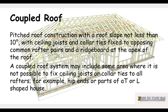A coupled roof is a pitched roof construction with a roof slope that is not less than 10 degrees. It has ceiling joists and collar ties fixed to the opposing common rafter pairs and a ridge board at the apex of the roof.